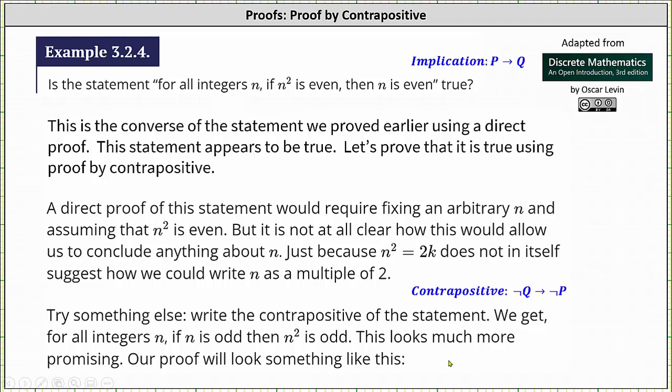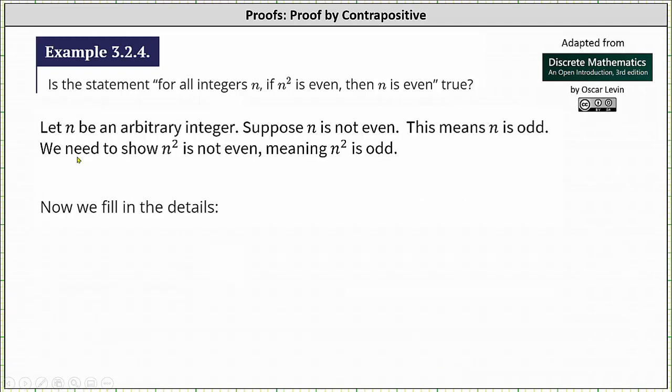This looks much more promising. Our proof will look something like this: Let n be an arbitrary integer. Suppose n is not even, this means n is odd. We need to show that n² is not even, meaning n² is odd.